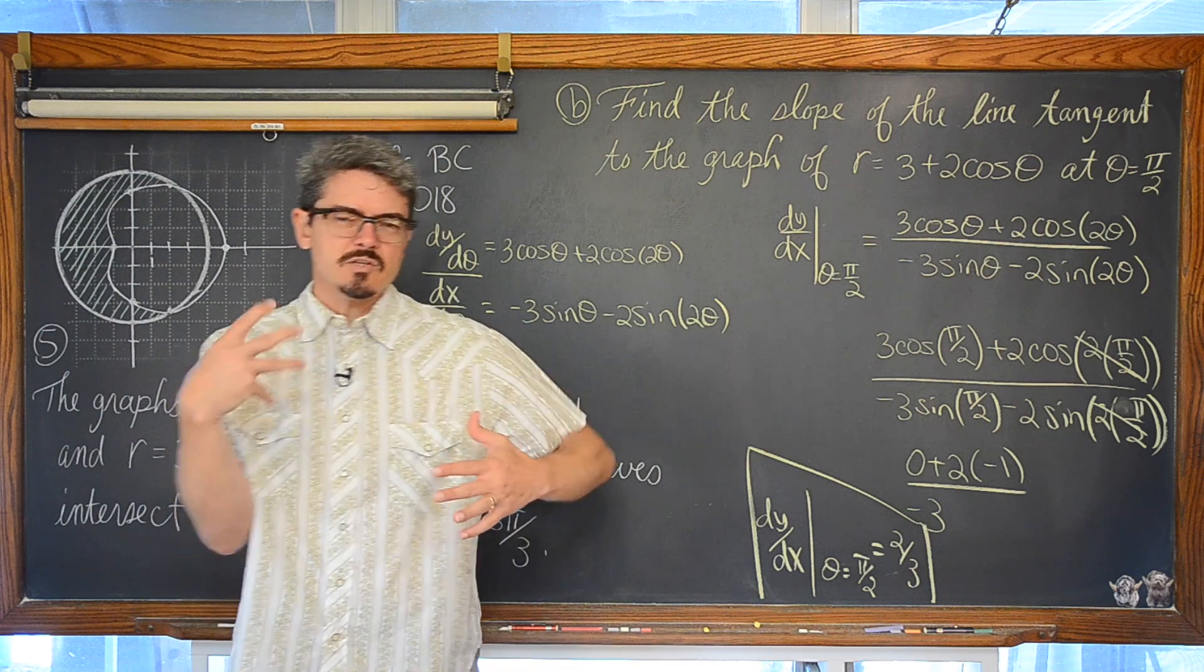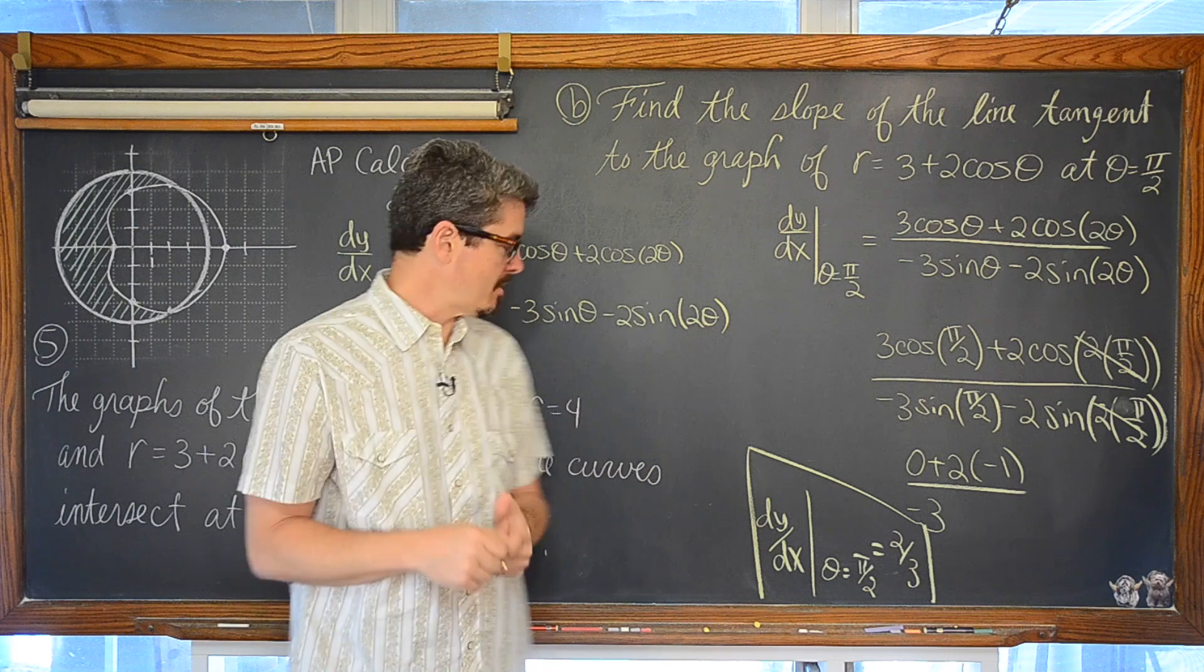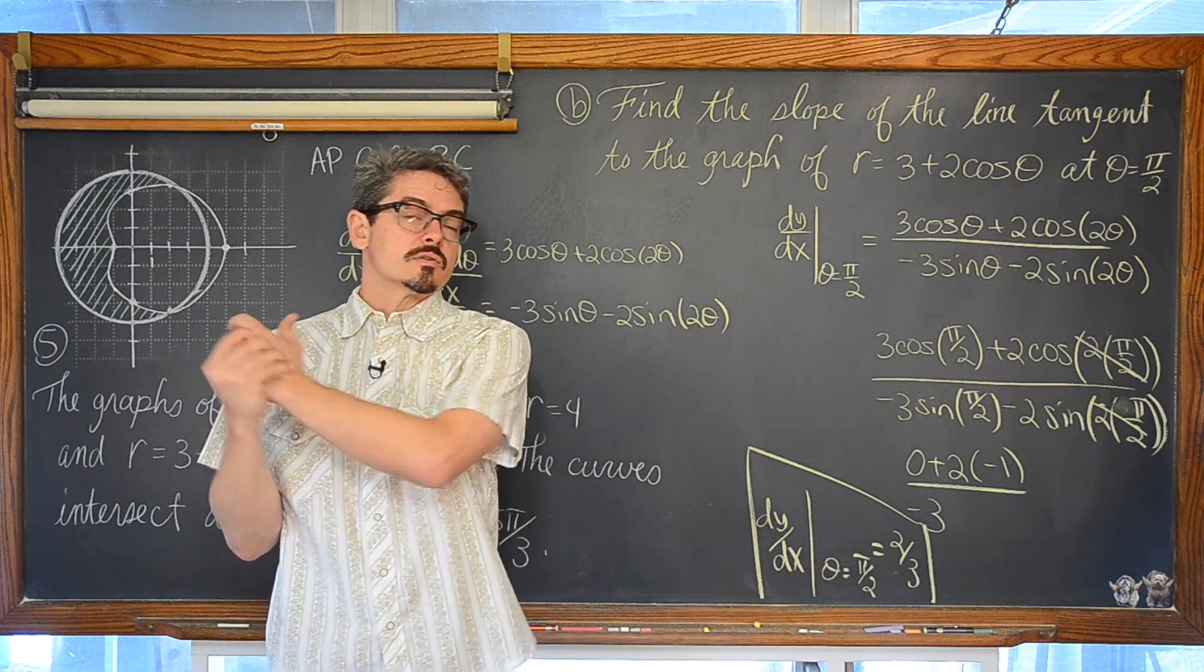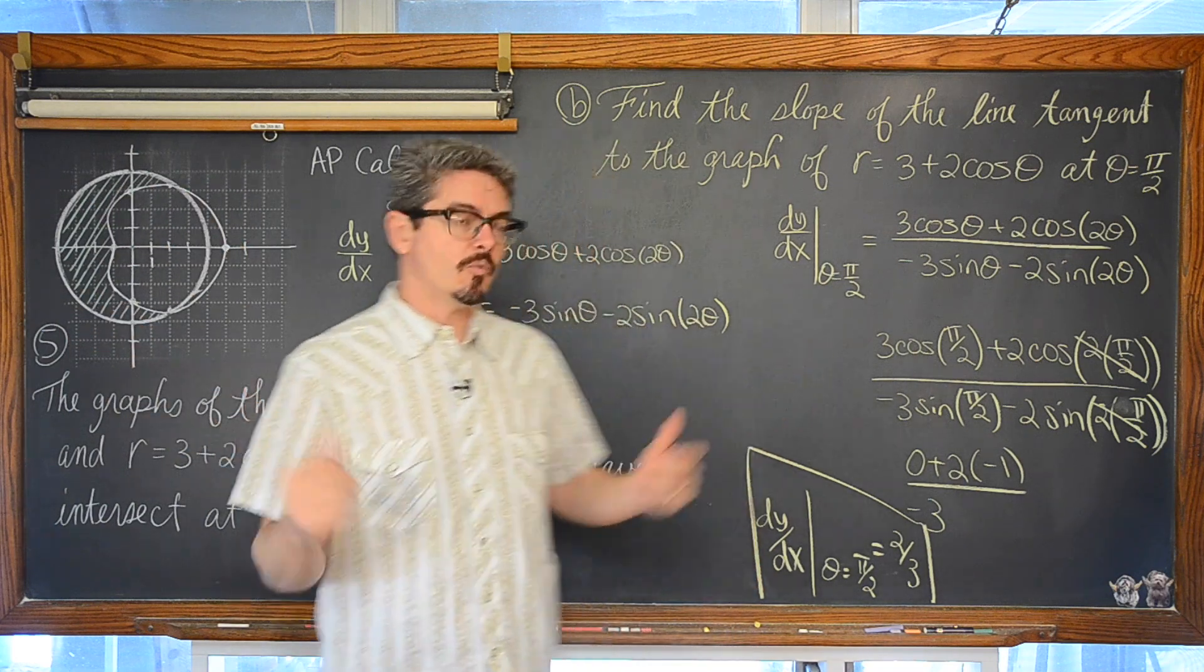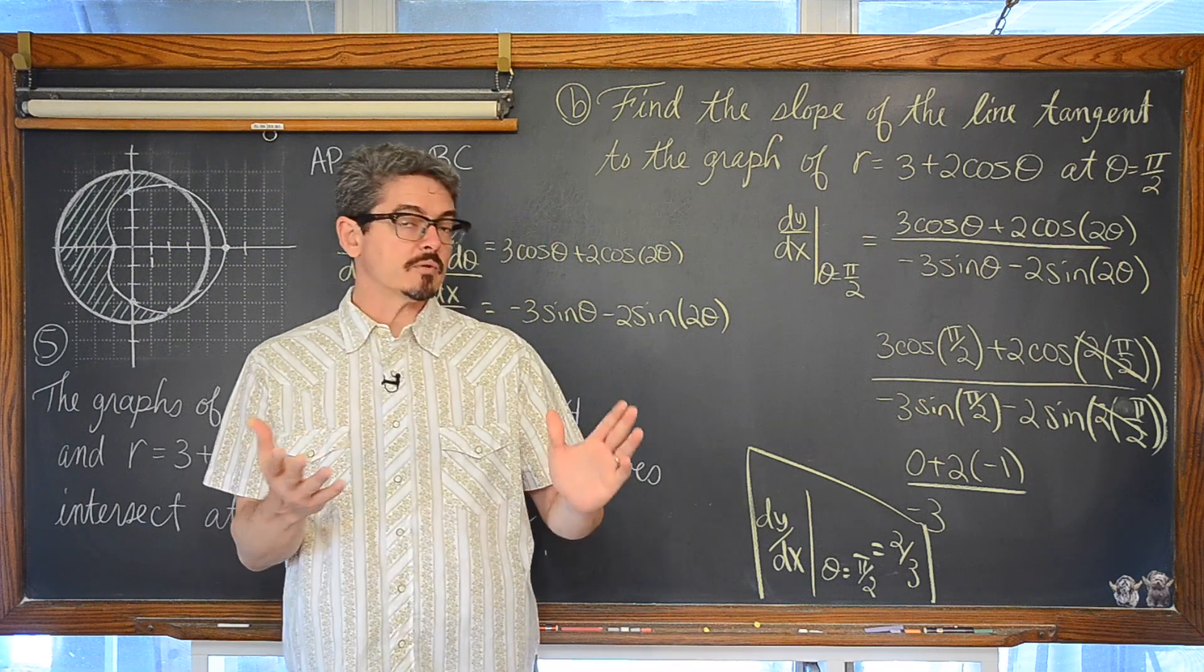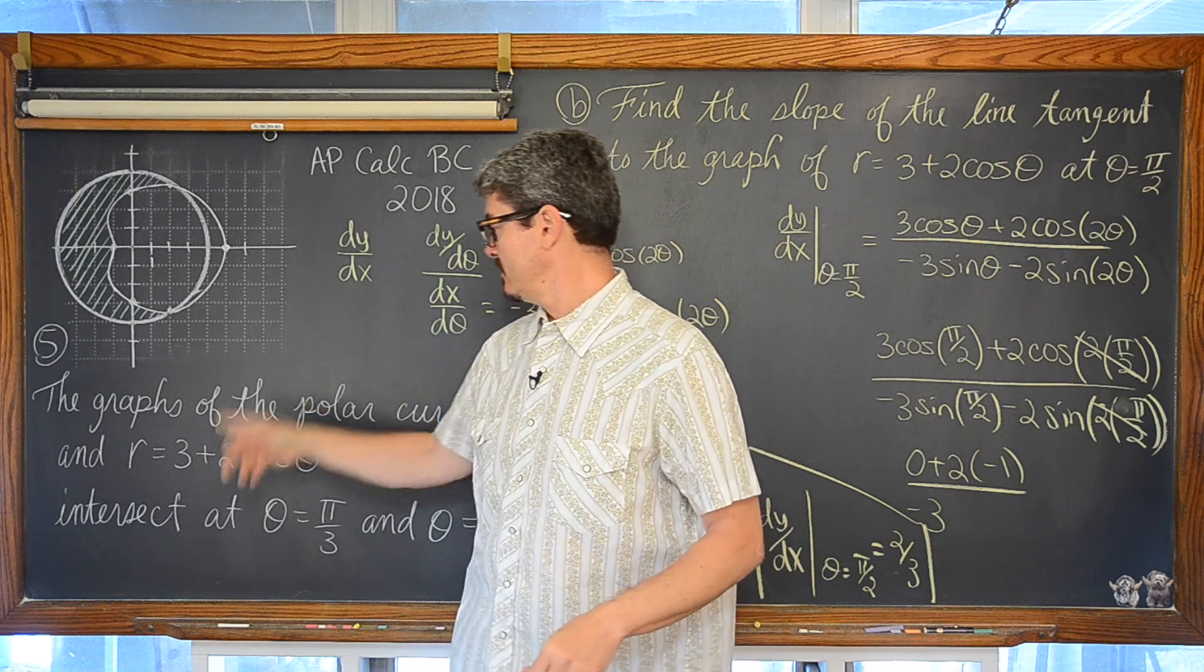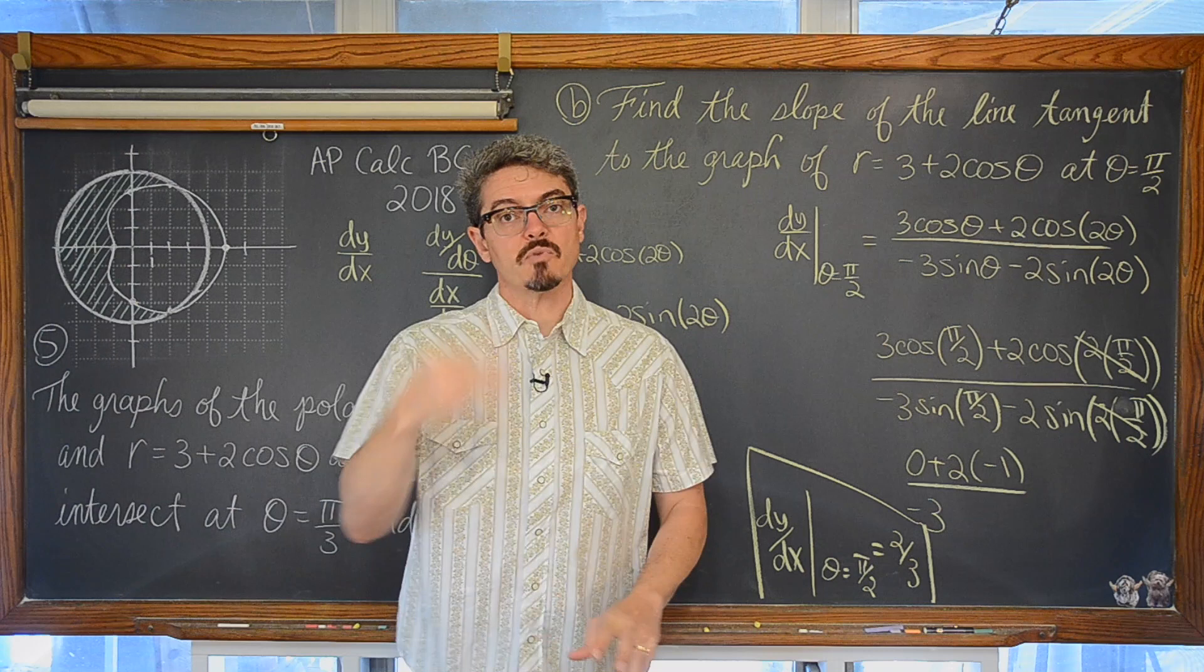And again, just make sure you give those AP graders a statement in context of the problem for every single problem. Don't say the slope is 2/3. The slope of this limousine is not 2/3 at every angle measure. It is specifically at theta equals pi over 2. You can also write a sentence, you know, the slope of this curve at theta equals pi over 2 is 2/3. Part 3 coming out.